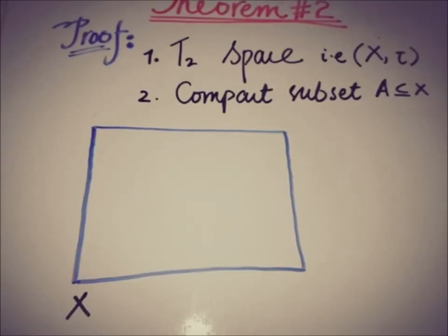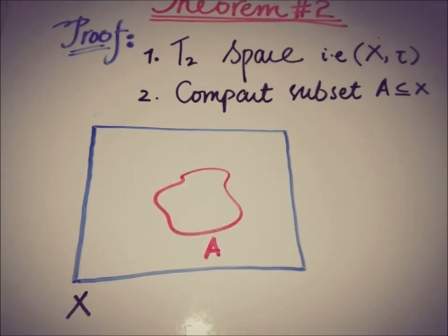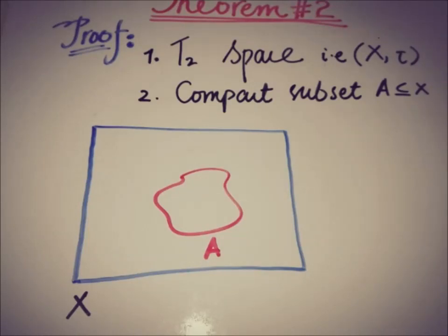Let's start proving this claim. We have a T2 or Hausdorff space represented by X, and a compact subset of that Hausdorff space represented by A. We have to show that this compact subset is closed.